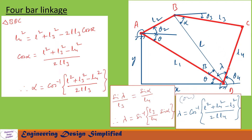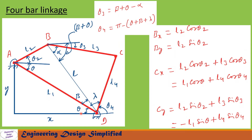Similarly, we can use either the sine rule or cosine rule to find angle lambda. If lambda exceeds 90 degrees for any given theta2, it is better to use the cosine rule: lambda equals cos inverse of (l squared + l4 squared − l3 squared)/(2·l·l4). Alternatively, using the sine rule: lambda equals sin inverse of (l3/l4)·sin(alpha).